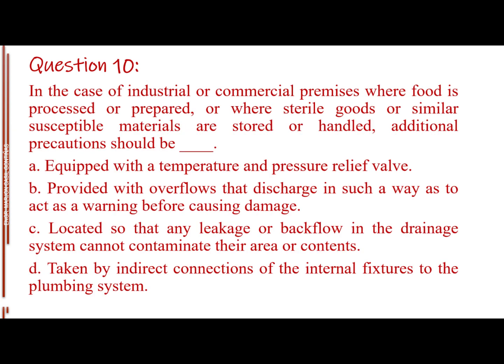Question number 10. In the case of industrial or commercial premises where food is processed or prepared, or where sterile goods or similar susceptible materials are stored or handled, additional precautions should be blank. Letter A, equipped with a temperature and pressure relief valve. Letter B, provided with overflows that discharge in such a way as to act as a warning before causing damage. Letter C, located so that any leakage or backflow in the drainage system cannot contaminate their area or contents. Letter D, taken by indirect connections of the internal fixtures to the plumbing system. The answer is Letter D, taken by indirect connections of the internal fixtures to the plumbing system.